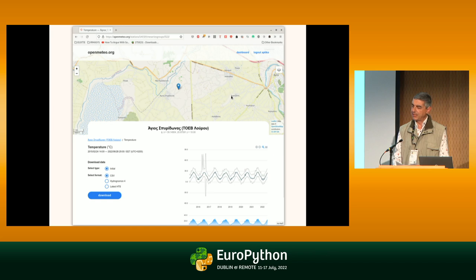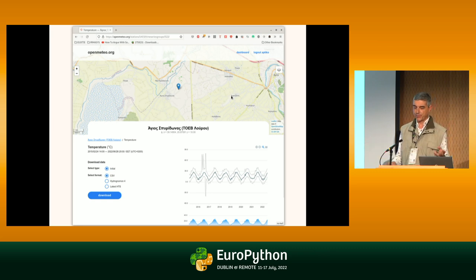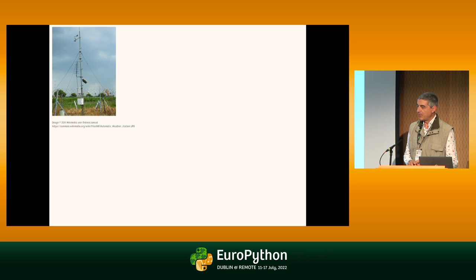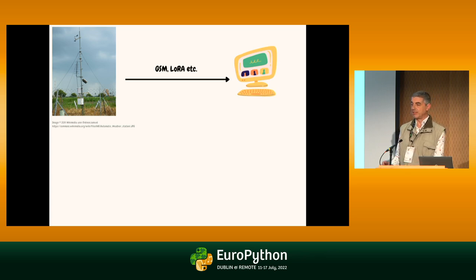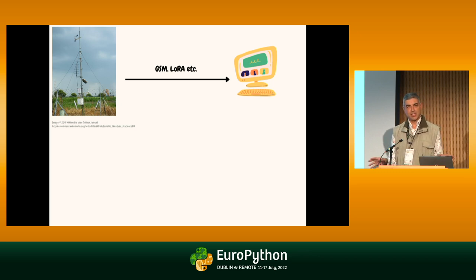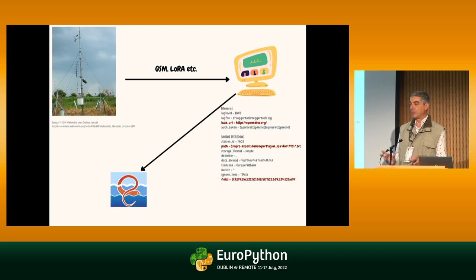The problem we had in this particular case is how to update the data. You have the meteorological stations with sensors measuring things — you have to somehow get these measurements into the database. The stations are often installed in remote areas with no connection to the power network or fixed telephone network, usually powered with a battery and a solar panel. They have some means of communication, and at the other end there's a computer which usually runs Windows and runs software provided by the manufacturer of the station — and it downloads the data, storing it in files.